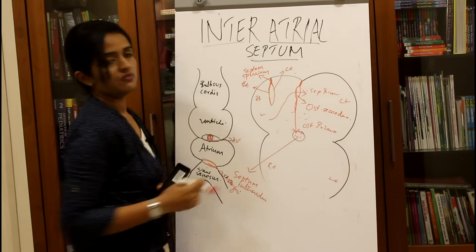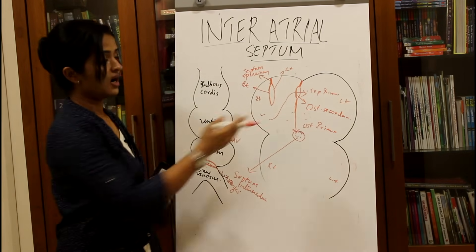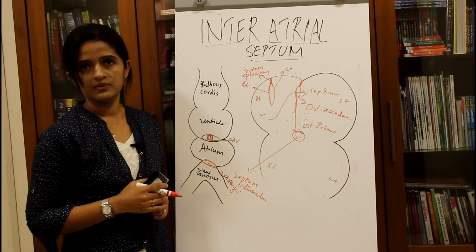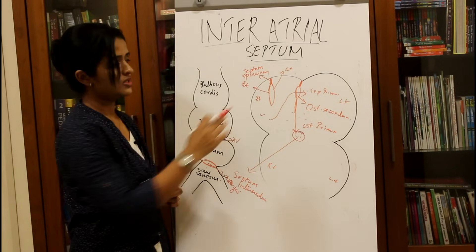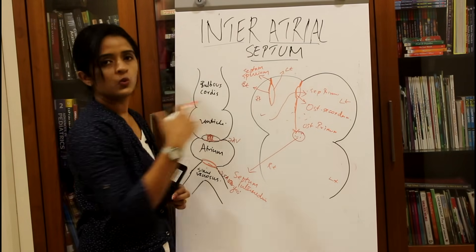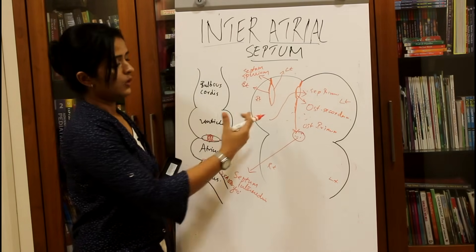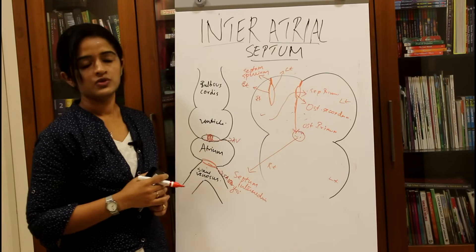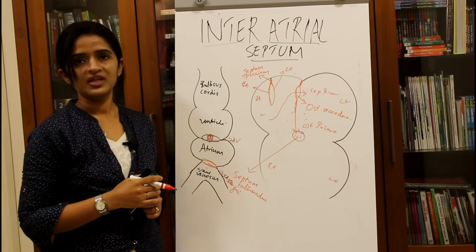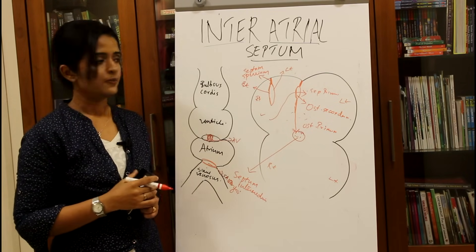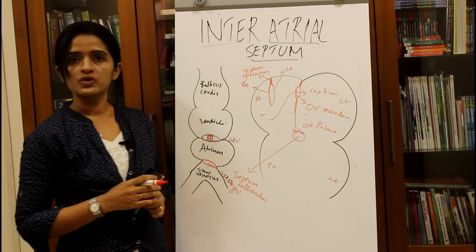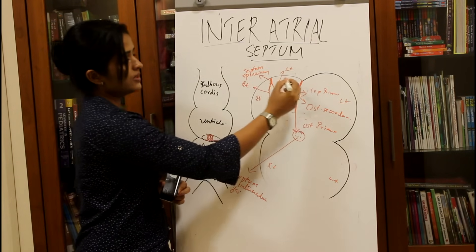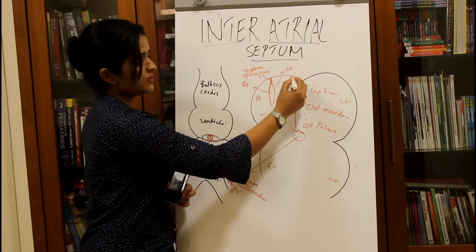This second opening is called the ostium secundum — formed after the ostium primum, hence the name. Ostium secundum allows blood from the right atrium to flow into the left atrium.